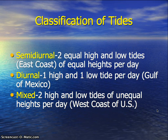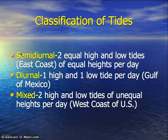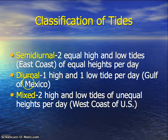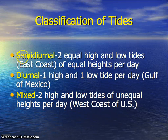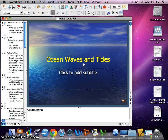There are three classifications of tides. The semi-diurnal tide has two equal high tides and low tides per day — this is what we have on the East Coast. The diurnal tide has one high tide and one low tide per day. Mixed tides have two high tides and two low tides of unequal heights per day. Tomorrow in class we'll be looking at ocean waves and calculating tidal ranges.